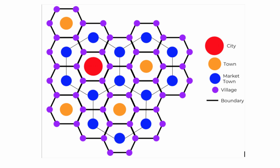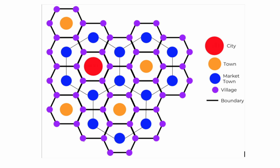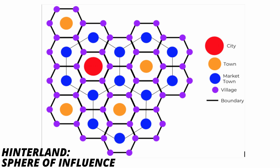Another model you want to know is the central place theory, which explains the number, size, and location of human settlements in a particular region. Looking at the image, you'll notice there is only one city at the top of the hierarchy. As you go down to the village or hamlet level, settlements happen more frequently and their hinterland doesn't extend as far.